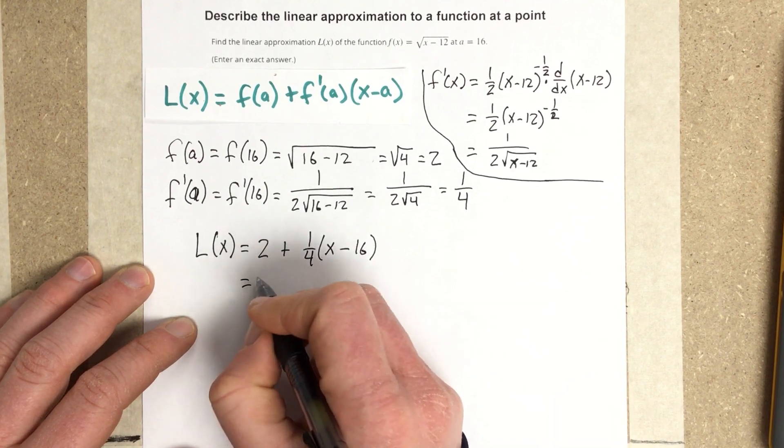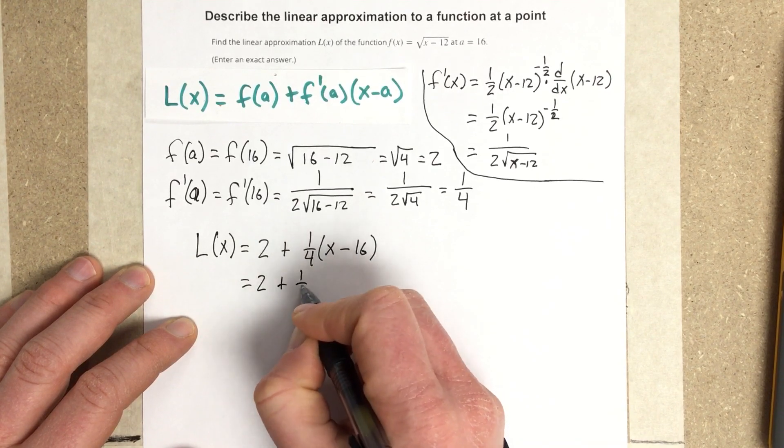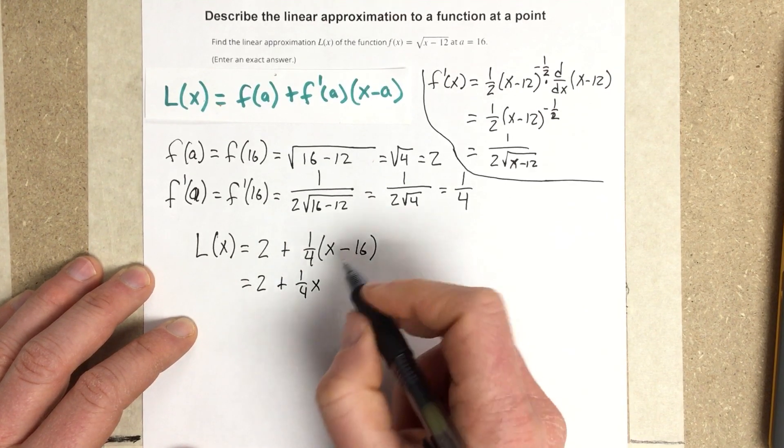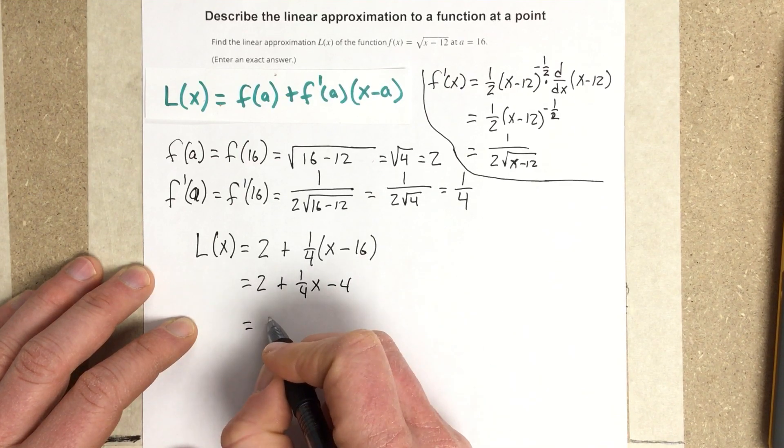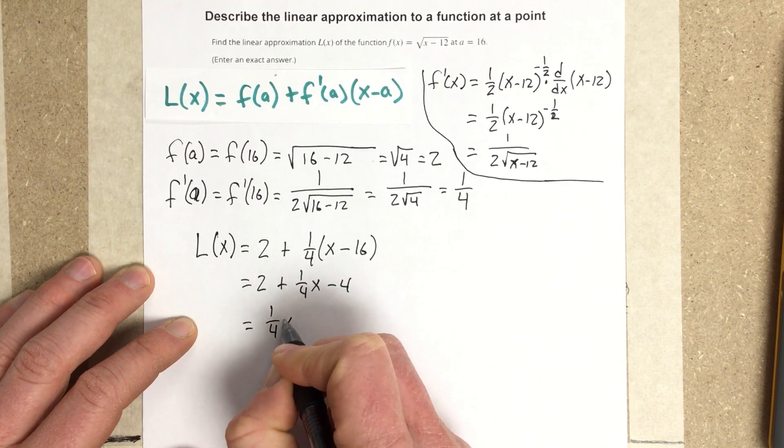And then I can distribute there, and I get 2 plus 1 fourth x. 1 fourth times 16 is negative 4. Combine like terms, I get 1 fourth x minus 2.